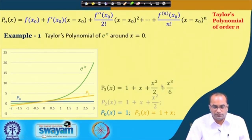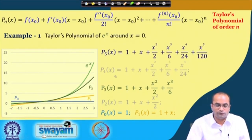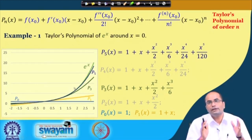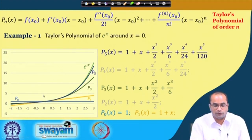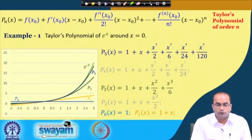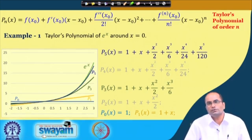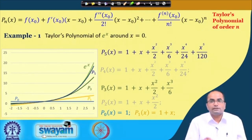Continuing, we can evaluate p₂, then p₃ — plotted here — and going further, p₅. If we plot p₅, it is pretty close to the exponential function over a wide interval around x = 0, the point of expansion. Moving further to degree 6 or 7, we get closer still to the exponential function. By increasing the degree of the polynomial we can approximate the function as well as we like.